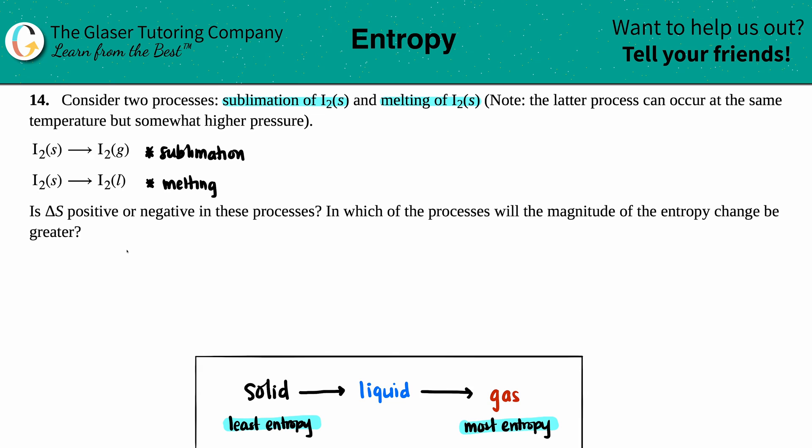Now here's the question: Is the ΔS positive or negative in these processes? So let's answer this question first. If we have I₂ solid and I'm going to I₂ gas, would this ΔS be a positive or a negative?